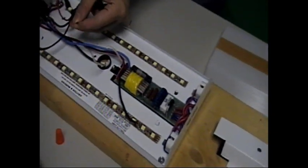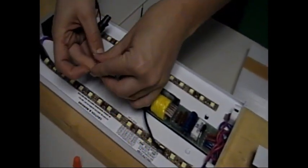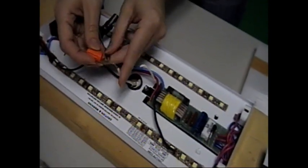Then, we'll take the two negative wires from the LED strips and attach them, once again putting on a wire nut.